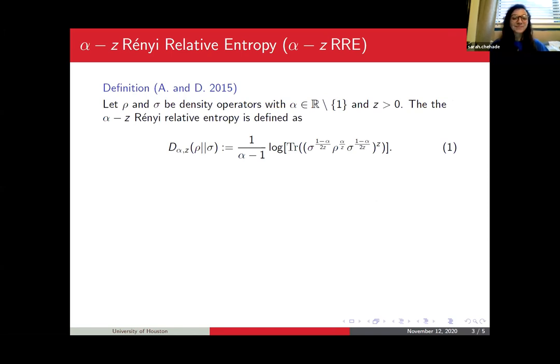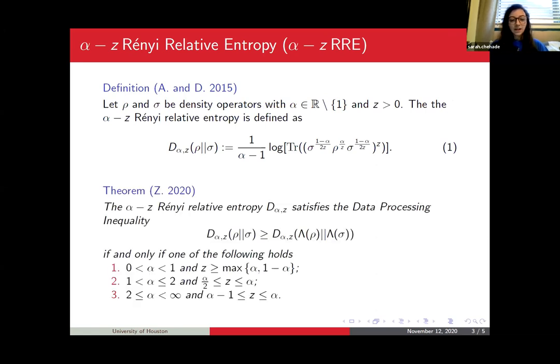We lose information about rho and sigma, or the states become less distinguishable. Any time we see an inequality, it's natural to ask when it's saturated. That was answered by Petz in 1988. He proved this inequality is saturated if and only if there exists a quantum channel that recovers rho and sigma. That map R depends on rho and lambda, and we can write out its explicit form.